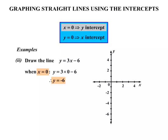So the point x is 0, y is negative 6. That is this point, and we plot that on the graph. That's down there. That is our y-intercept.